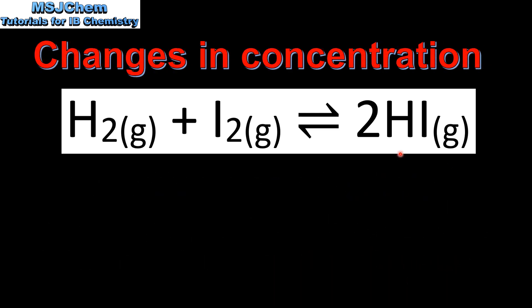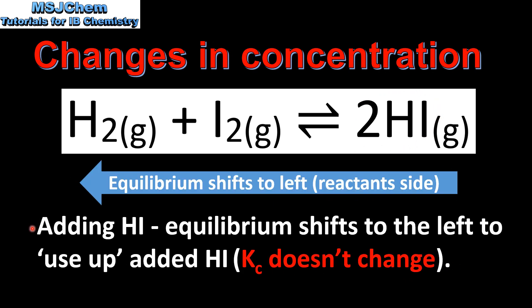Next, let's look at the effect of adding hydrogen iodide to the system at equilibrium. By adding hydrogen iodide, the equilibrium will shift to the left to use up the added hydrogen iodide. Once again, by making changes in concentration, the value of Kc doesn't change.